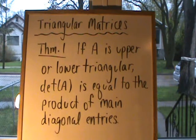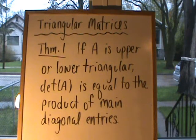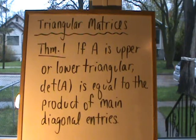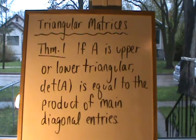Theorem 1 says if A happens to be upper or lower triangular, then the determinant of A is just equal to the product of all of the entries that are on the main diagonal of our triangular matrix.